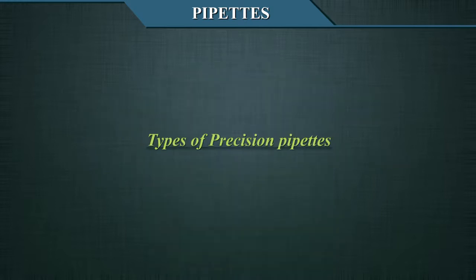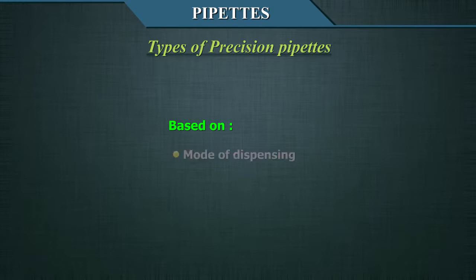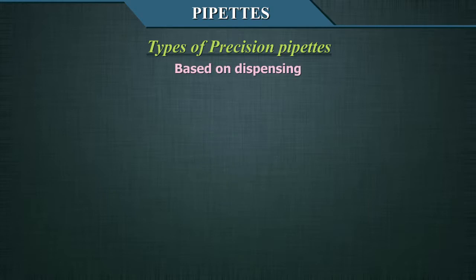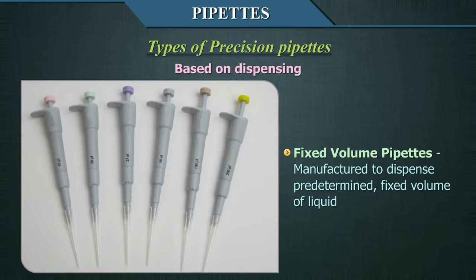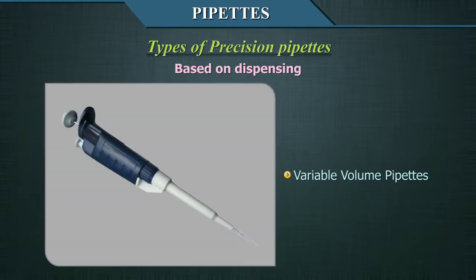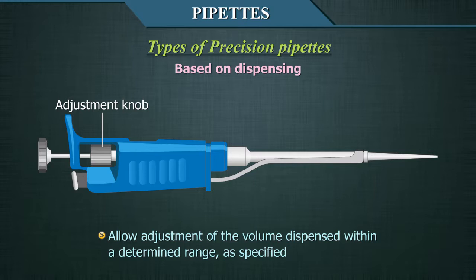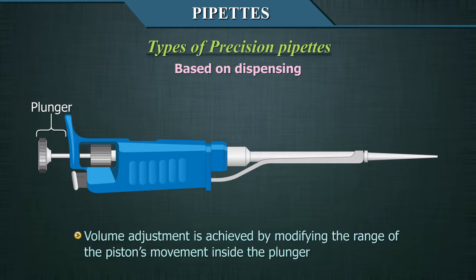Types of precision pipettes can be classified based on mode of dispensing and mechanism of action. Based on dispensing, they are further divided into fixed volume pipettes or variable volume pipettes. The fixed volume pipettes are manufactured to dispense a pre-determined fixed volume of liquid. The variable volume pipettes allow adjustment of the volume dispensed within a determined range, achieved by modifying the range of the piston's movement inside the plunger.